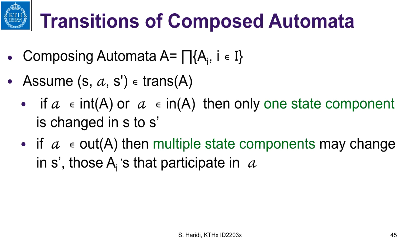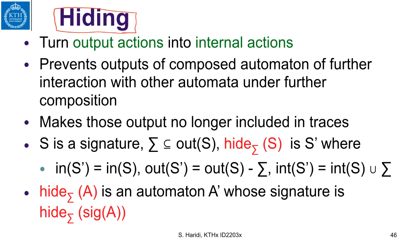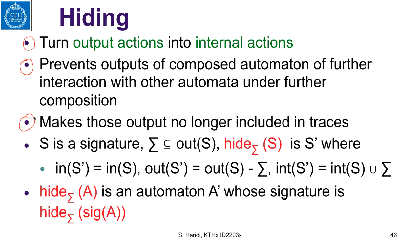There is one more operation called hiding. In input-output automata, action names are used, and sometimes when composing automata you can get a name conflict. Hiding turns some output actions into internal actions. Remember that when we compose automata, output actions of the component are still output actions of the composed automaton. Sometimes we want to prevent outputs of a composed automaton from further interaction with other automata under further composition, and we do this by hiding.